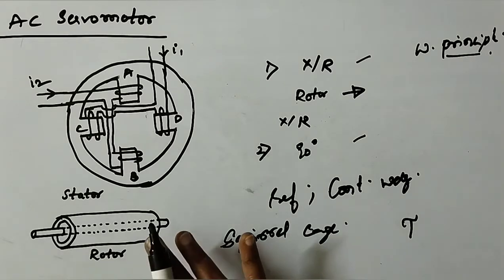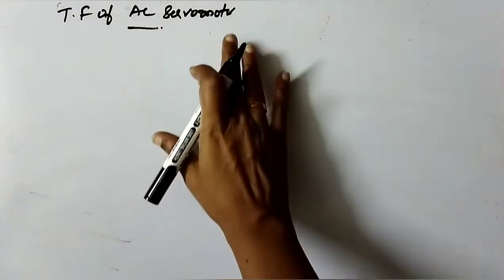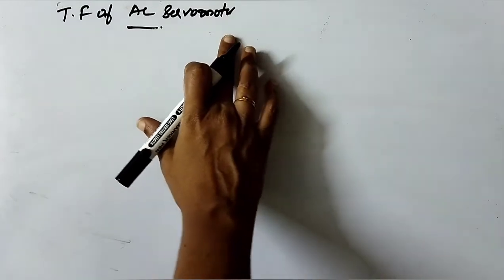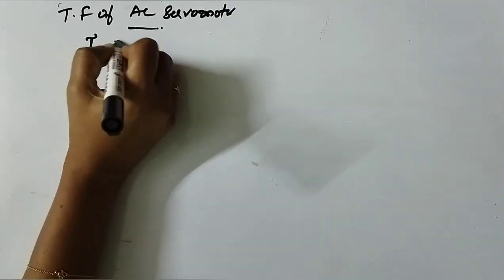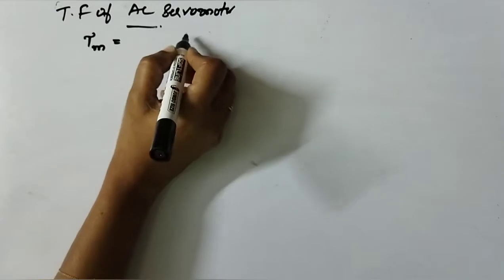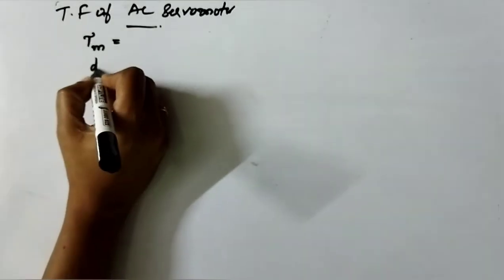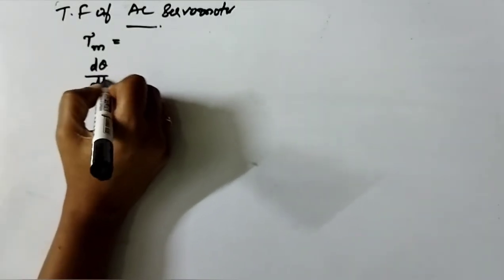That is how AC servo motor works. Now, we will see the transfer function of AC servo motor. M is equal to torque developed by servo motor. dθ/dt is angular speed. τL is torque required by the load.